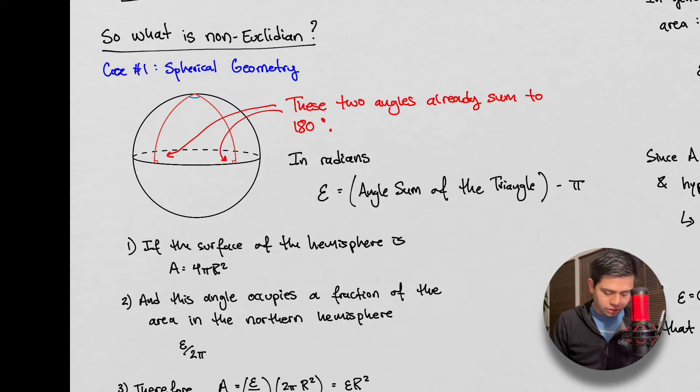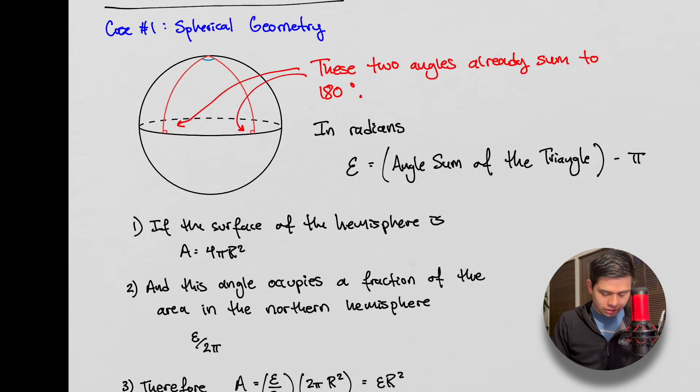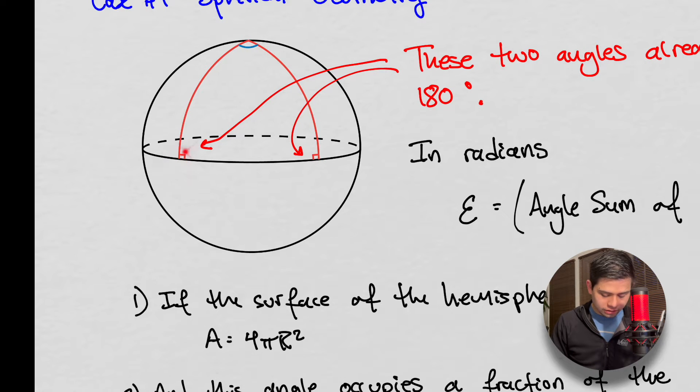In the case of spherical geometry, this is case one here, we can already see that the angles, the internal angles on any triangle that you draw on a sphere are going to be greater than 180. Because you can take two parallel lines that are perpendicular to the equator on a sphere, and automatically these are already 90 degrees and 90 degrees. Those add up to 180, but parallel lines on a sphere meet at some point, and that point is going to be, in this case, the pole.